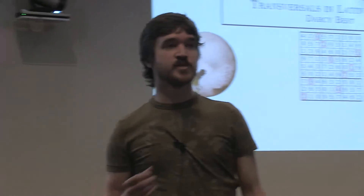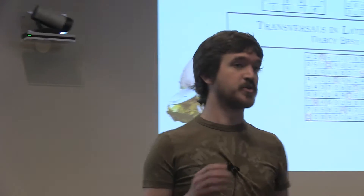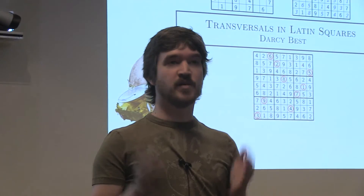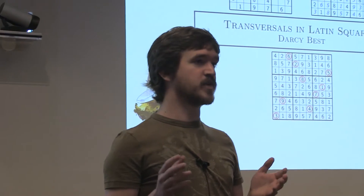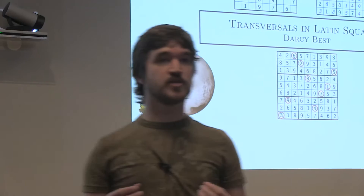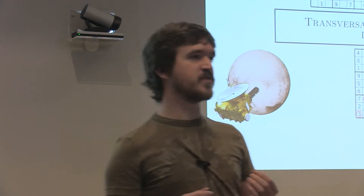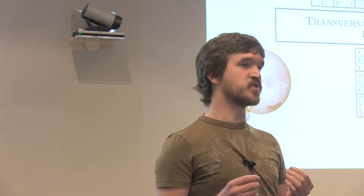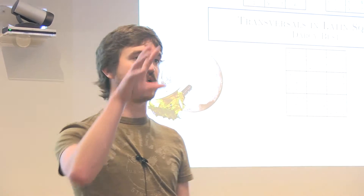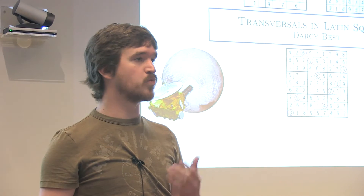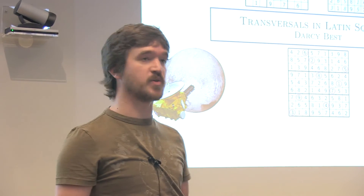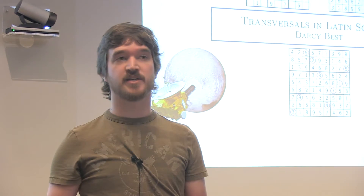So I'm sure everyone in this room is familiar with Sudoku puzzles. We have a 9x9 grid with some of the entries already filled in, and your goal is to finish filling it in such a way that in any row, any column, or any of those 3x3 sub-blocks, you're going to get the numbers 1 through 9 showing up exactly once.